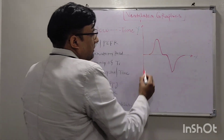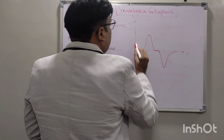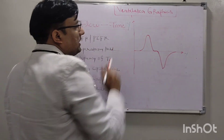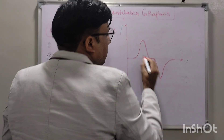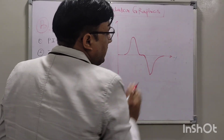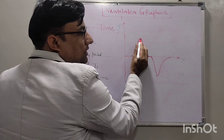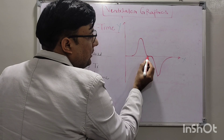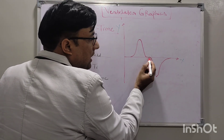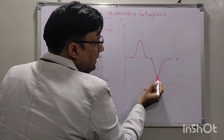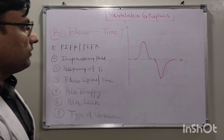In the flow-time curve, the x-axis is time in seconds and the y-axis is flow in liters per minute. Above the baseline on the positive side is inspiratory flow; the negative side is expiratory flow. Inspiration starts, flow increases to the peak flow, then decreases, coming to the baseline. There will be an inspiratory hold during the inspiratory time, then expiration starts — going negative and returning to the baseline. This is the full flow-time curve.